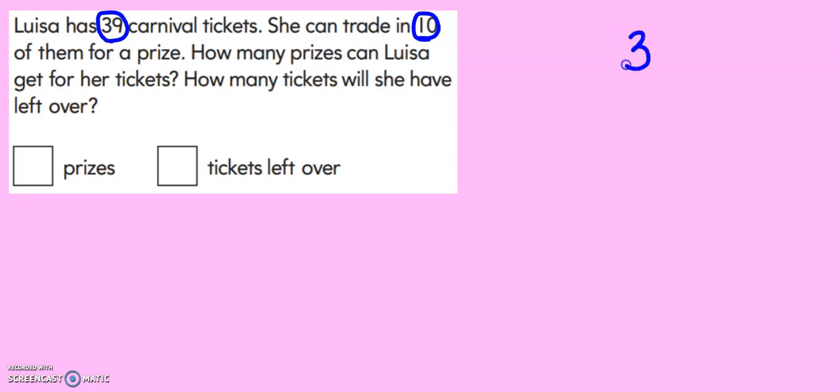So we know that she has 39 tickets. And every 10 tickets, she gets a prize. So let's draw out our number. 10, 20, 30, 31, 32, 33, 34, 35, 36, 37, 38, 39.